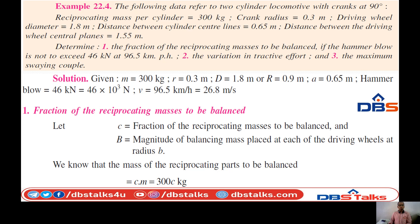The problem refers to a two-cylinder locomotive with cranks at 90 degrees to each other. The reciprocating mass per cylinder is 300 kg. The crank radius is 0.3 meters, the driving wheel diameter is 1.8 meters, and the distance between the cylinder center lines is 0.65 meters.